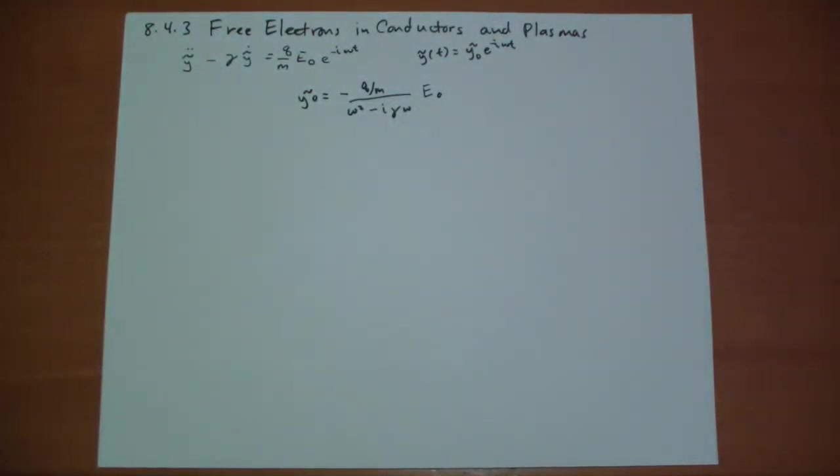So that's what happens when you eliminate the restoring force, the binding force. There's no binding force in this case. So rather than talk about the polarization, in this case the distance between the original nucleus and the electron can get quite large, let's talk instead about the current.